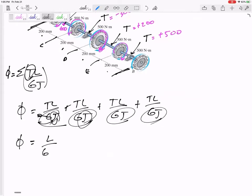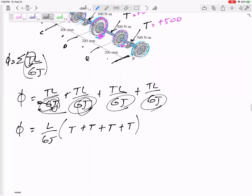L over GJ, because they're the same, but these torques are all different. I think it's worth your time to see how much you could factor out, only if it's constant in all four sections.